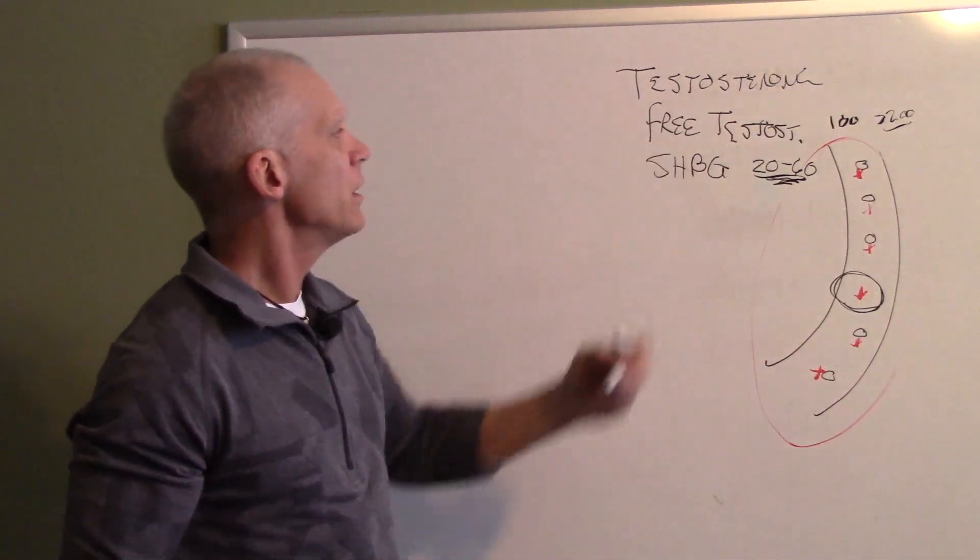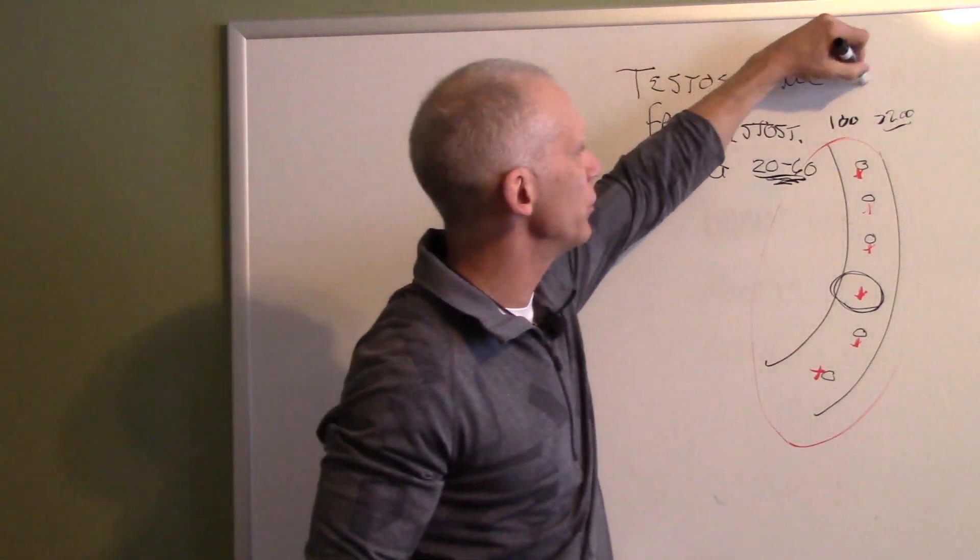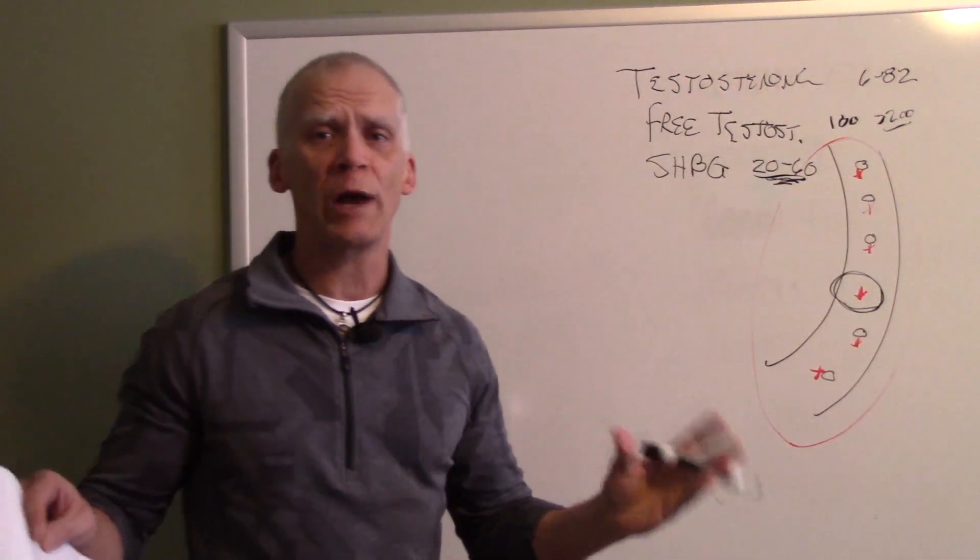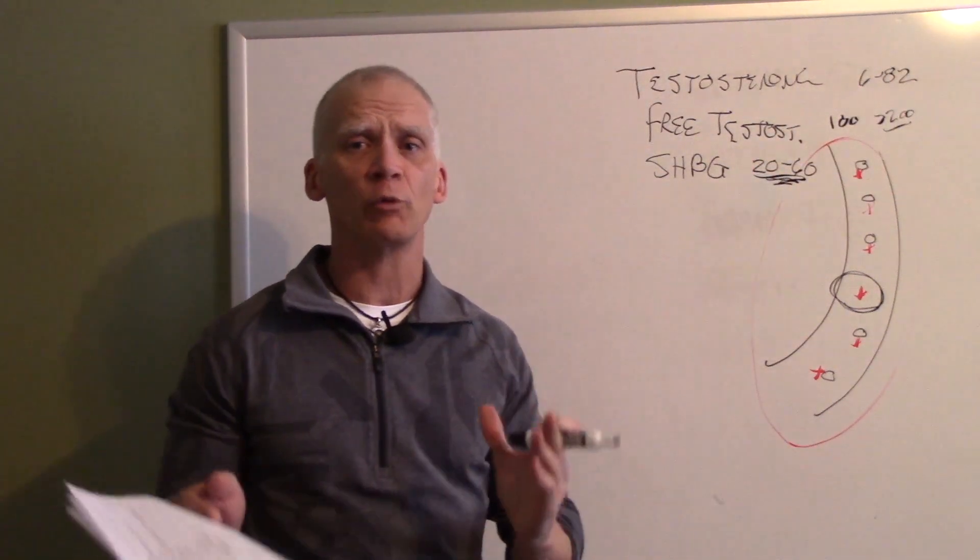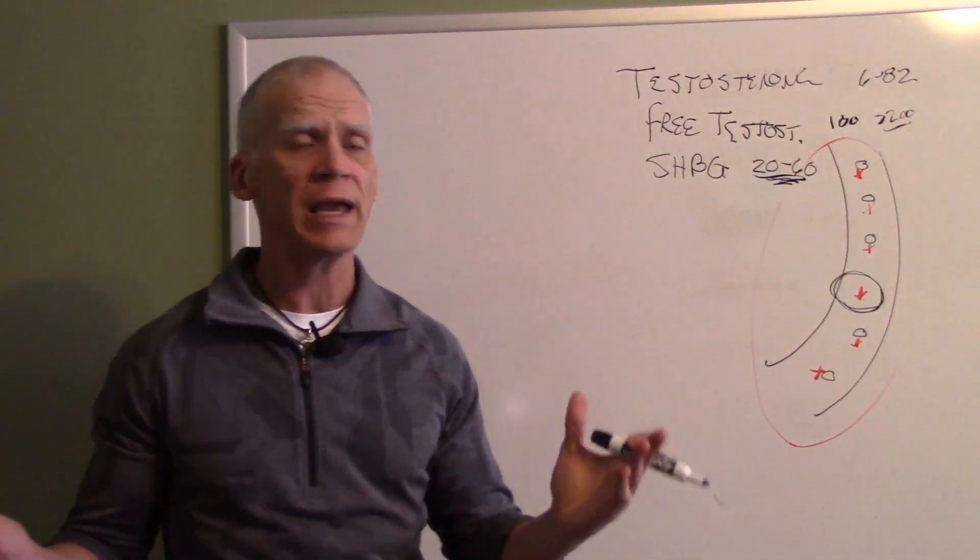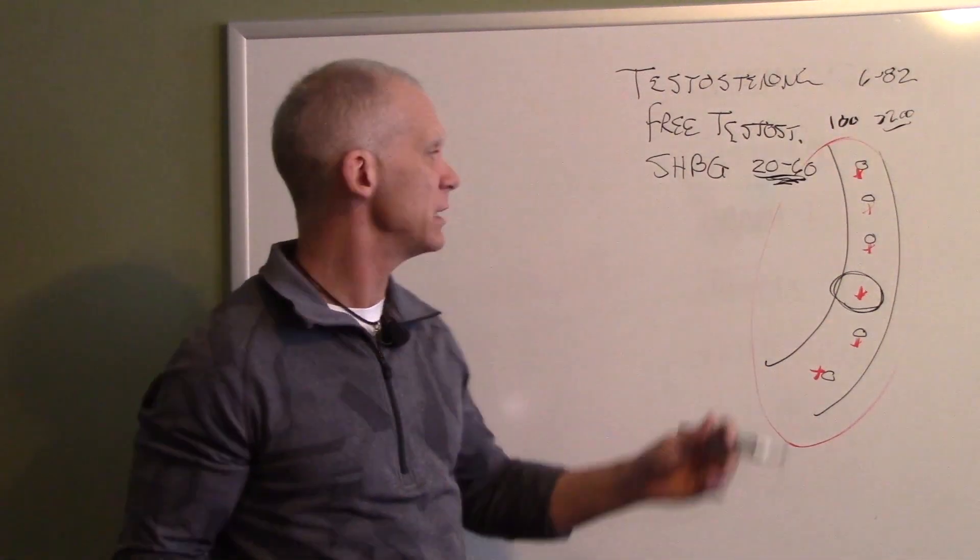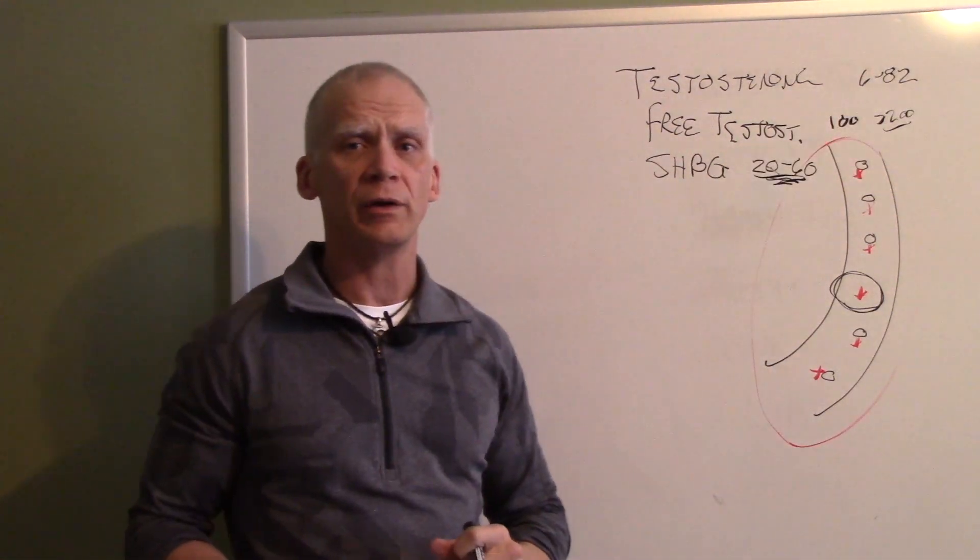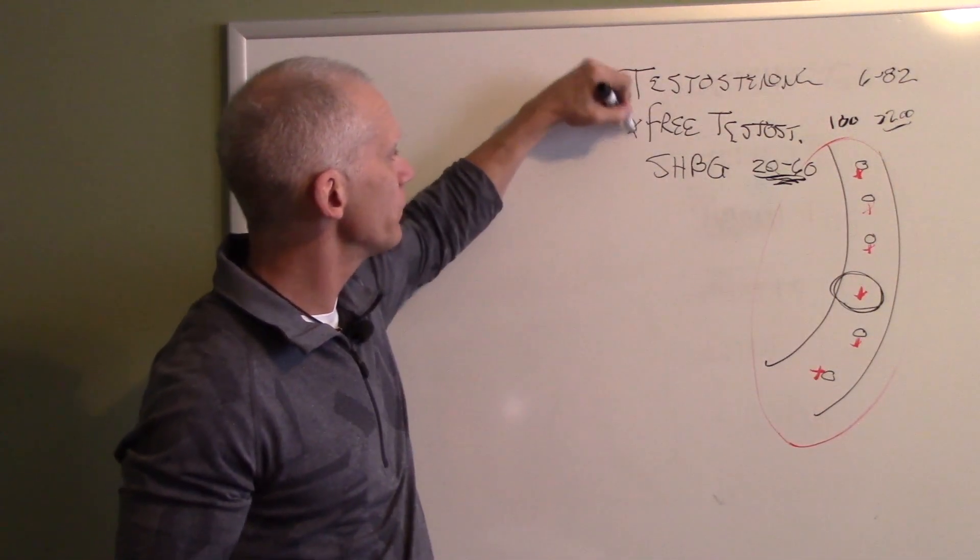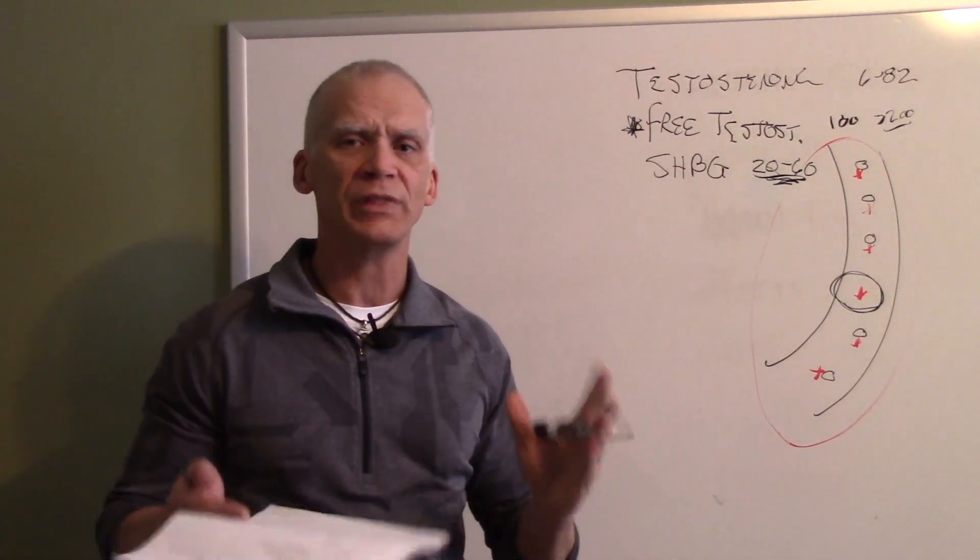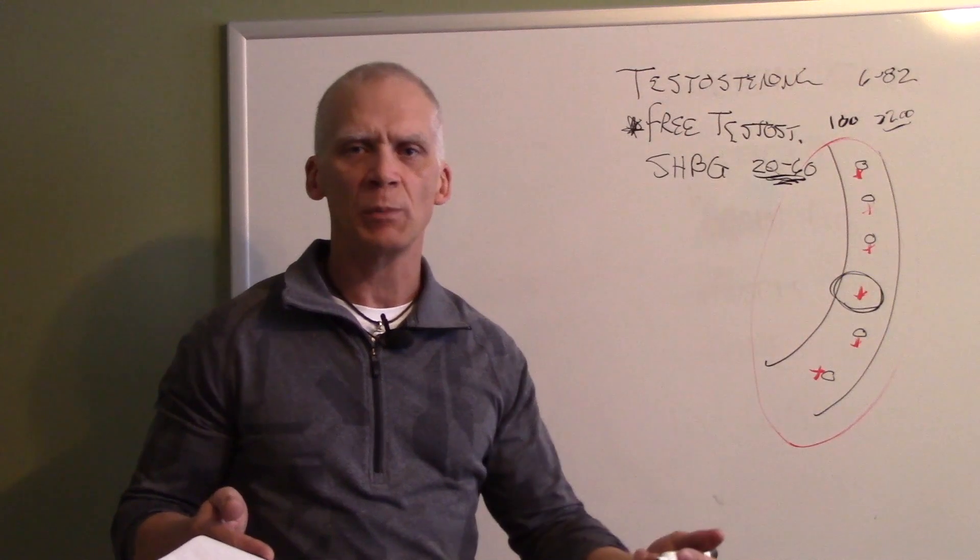When you look at total testosterone, I'm going to use the labs like LabCorp. They use a range of about 6 to 82. Number one, 6 to 82 is an enormous range for testosterone levels. You can pick the person out in the room that would be 6 versus 82. This isn't like a narrow range like we have for sodium and potassium. But the problem is it doesn't mean anything because it's based on how much binding a person has. There's a big difference between somebody who's 20 and somebody who's greater than 200 on their sex hormone binding globulin. We need to understand what that is.